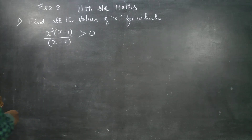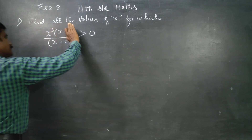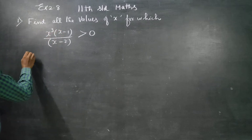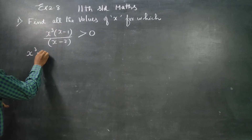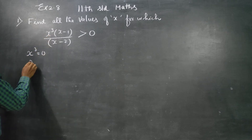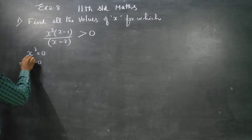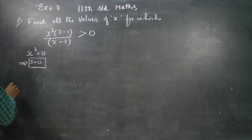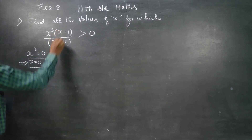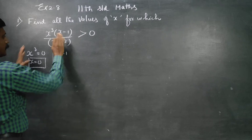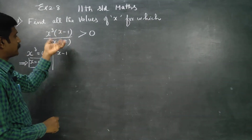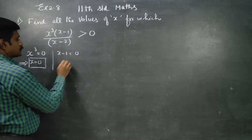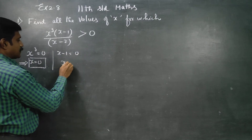First of all, to find the exact intervals where the expression is greater than 0, I have to find the critical values. Setting x cubed equal to 0 implies x is equal to 0. This is one value. For the factor x minus 1, setting it equal to 0 gives x is equal to 1.